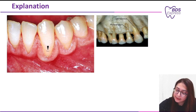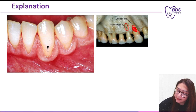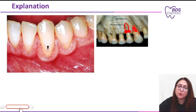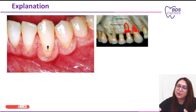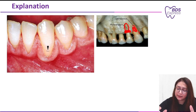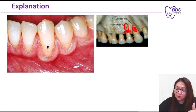You should know what dehiscence and fenestration are. Here you can see complete bone loss — this is dehiscence. But here you can see a window is created; the margin of bone is intact, but there is a window, and most of the time the gingiva is also denuded from that place. This is fenestration, generally seen in children and primary dentition. Dehiscence is generally common in aging.